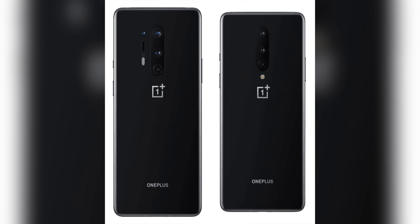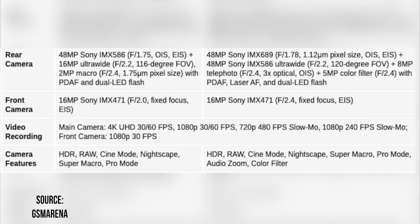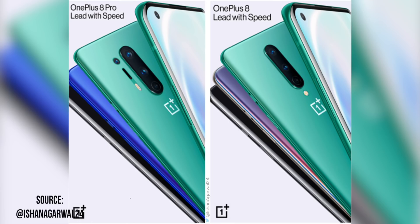On the OnePlus 8, you have a 48MP IMX586 sensor — the same used in the OnePlus 7T. It's unclear why they haven't used the IMX686. Above that, you get a 16MP wide-angle lens and a 2MP macro lens. Notably, the OnePlus 8 does not have a telephoto lens like the 7T had, but you will get optical image stabilization support.